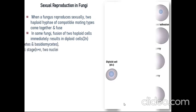Let's have a detailed account of sexual reproduction in fungi. When a fungus reproduces sexually, two haploid hyphae of compatible mating types come together and fuse. In some fungi, fusion of two haploid cells immediately results in diploid cells — doubling in chromosome number.